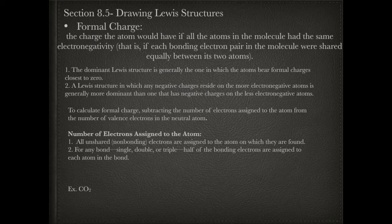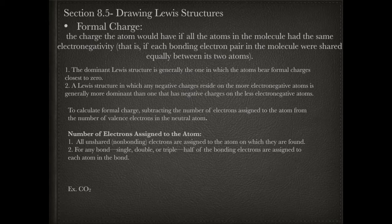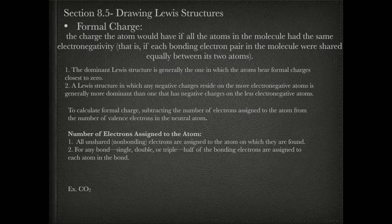To calculate formal charge, you take the number of electrons assigned to the atom and subtract that from the number of valence electrons. All unshared (non-bonding) electrons count as one electron each, so a lone pair counts as two electrons assigned to the atom. For bonds — single, double, or triple — you take half of the bonding electrons. For example, a single bond is two shared electrons, so it counts as only one electron assigned to the atom.